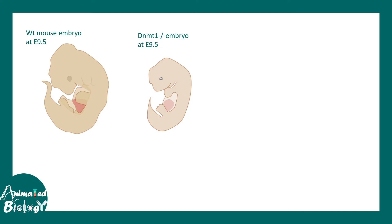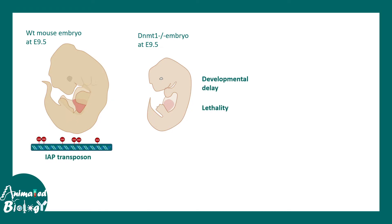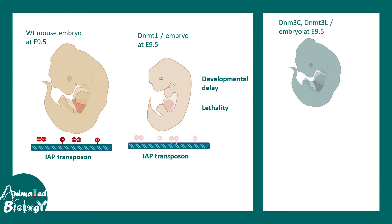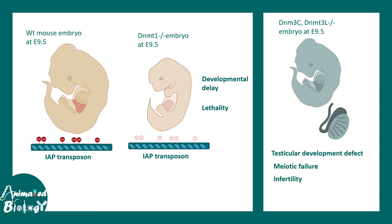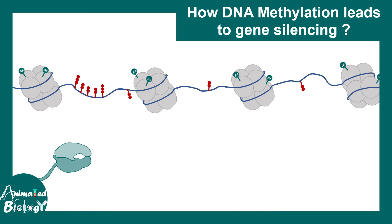DNMT1 is particularly important — DNMT1 knockout embryos show developmental lethality due to imprinting of a transposon gene. DNMT3c and DNMT3L mutants also die early. These mouse studies tell us that all these methylation-transferring enzymes are critically important in the context of gene expression.